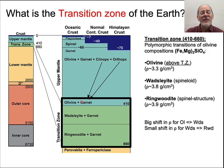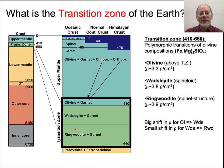In the transition zone, olivine is unstable — it transforms to Wadsleyite as soon as it's able. If we go deeper, it forms a spinel-group mineral, not the same as the spinel in the upper mantle. It's the same structure but completely different chemistry, further compressing a dense unit cell.